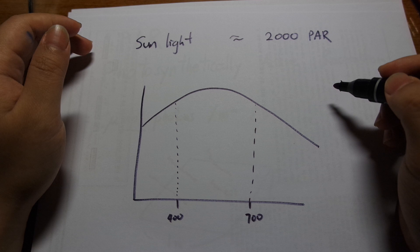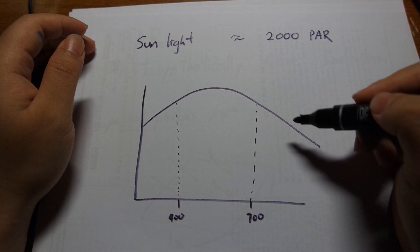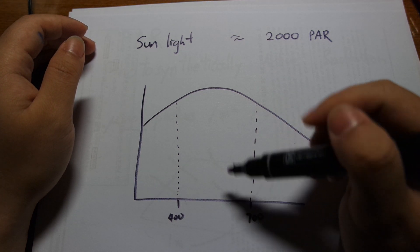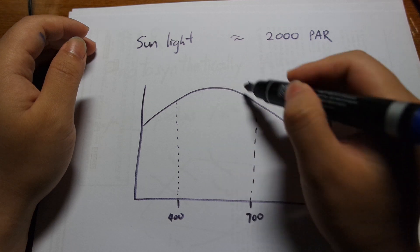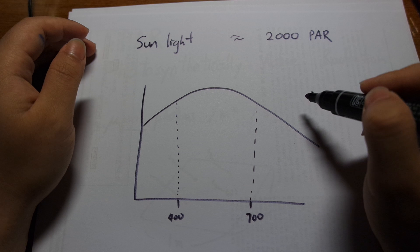Sunlight is around 2000 PAR and sunlight is composed of a variety of wavelengths and if you just take the visible light that is 400 to 700 nanometers and this amount of light hitting a certain surface per second, that is about 2000 micromoles of photons.